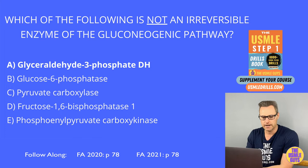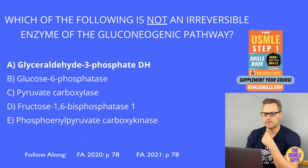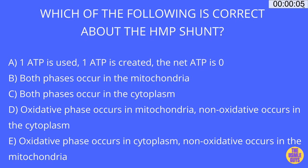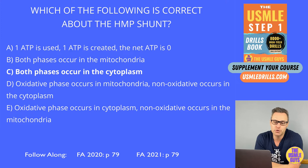Another multiple choice question. The correct answer here is C. Let's talk about the HMP shunt, which is needed to create NADPH and ribose.